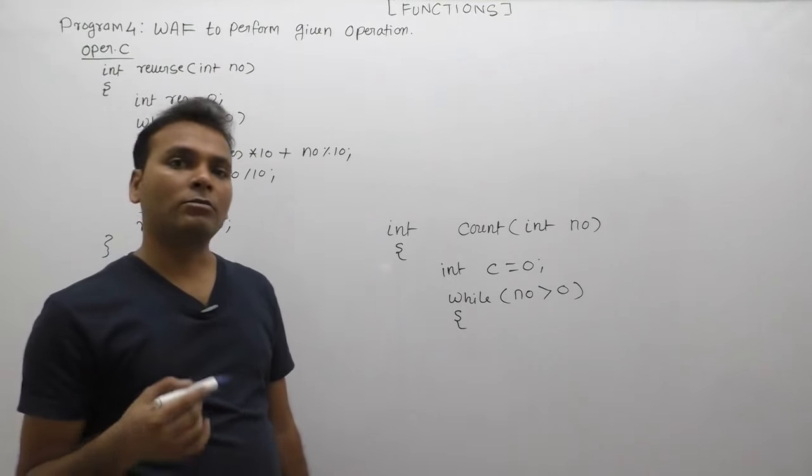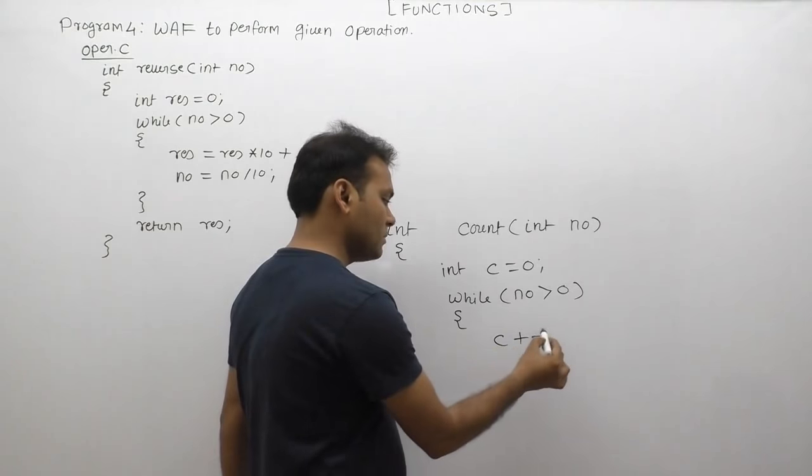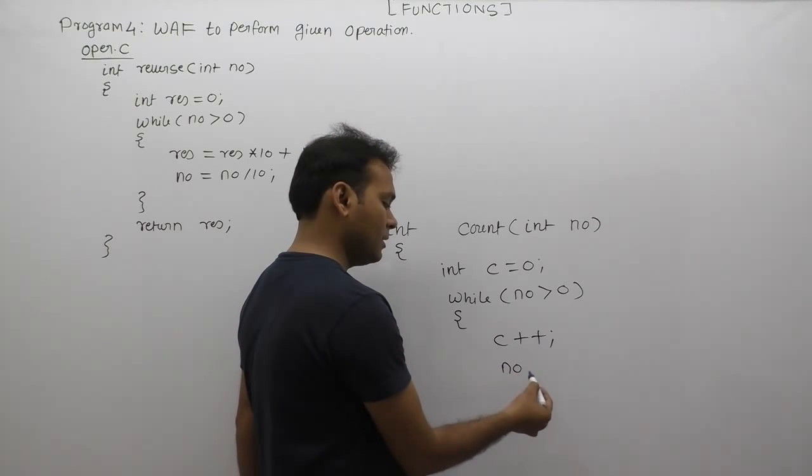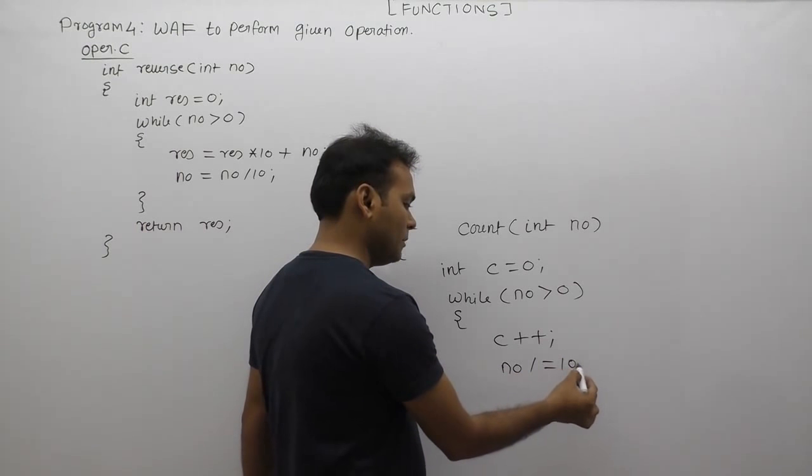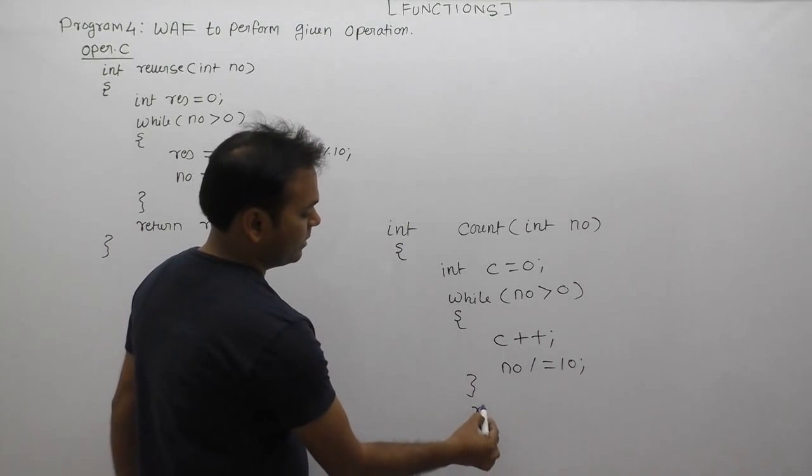Plus counter increment. Counter increment c++, initial value 0. Then number last digit change, number equals to number divided by 10 using compound assignment operator. Next one, finally returning.